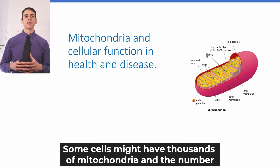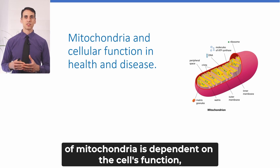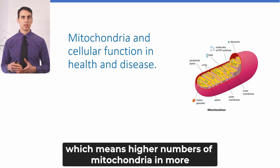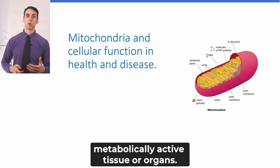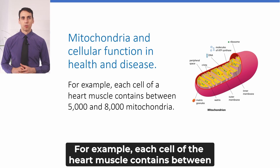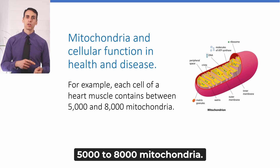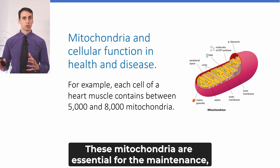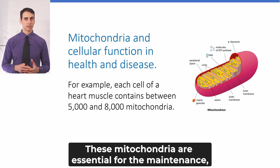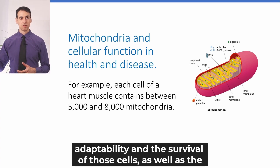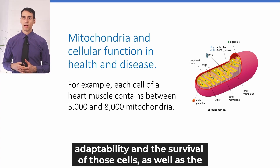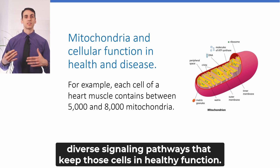The mitochondria is the energy factory of our cells, providing the power for cells to function and execute all their different roles. Some cells might have thousands of mitochondria, and the number depends on the cell's function — higher numbers appear in more metabolically active tissue or organs. For example, each cell of the heart muscle contains between 5,000 to 8,000 mitochondria. These mitochondria are essential for the maintenance, adaptability, and survival of those cells, as well as the diverse signaling pathways that keep those cells in healthy function.